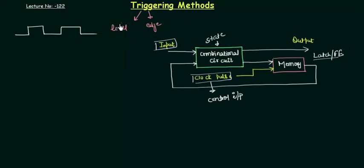In level triggering, whenever the clock remains high there will be a transition in your latches and flip-flops. Similarly, when the clock is high at any point, there will be a change or transition in your latches and flip-flops. This is called level triggering — whenever the clock is high, the change in the circuit will happen.